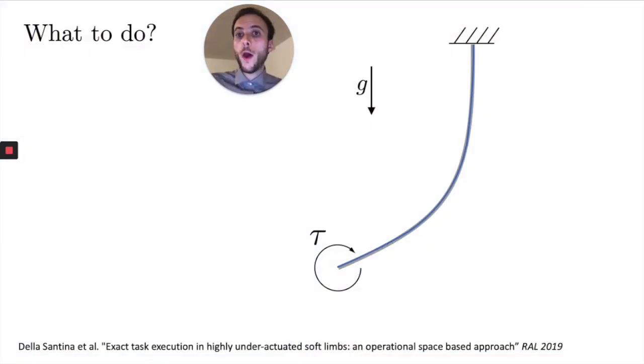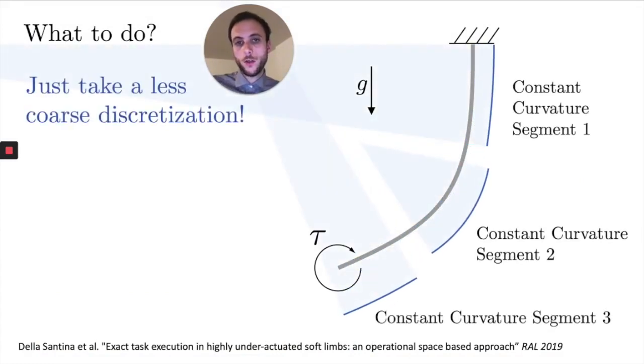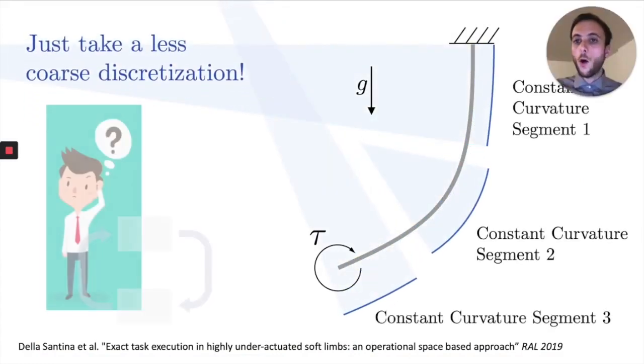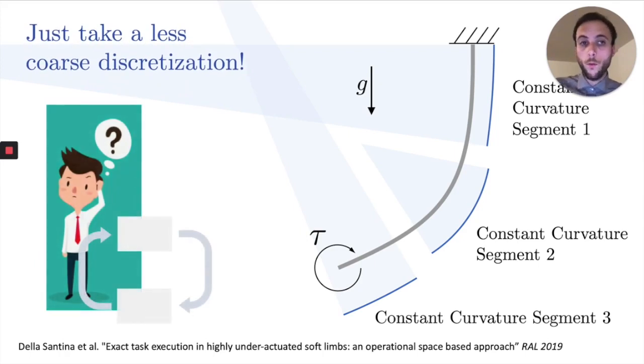A straightforward way to solve this problem would be to just take a less coarse discretization. However, when it comes to closing the loop, it's not easy to understand how one should connect the state space of all these new segments to the state space of the simpler system that you used to develop the controller.